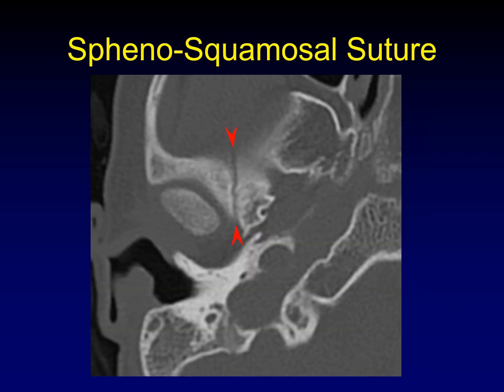Next is the sphenosquamosal suture. This runs medial to the temporomandibular joint from the medial aspect of the joint forward into the infratemporal fossa.